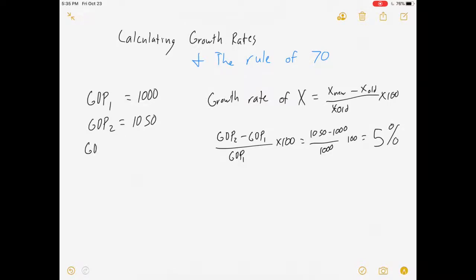What if we had a third year, and GDP was $1,155? Well, to calculate your growth between year two and three, you would take your new minus your old over your old times 100, would be $1,155 minus $1,050, divided by $1,050, times 100, which is going to come out to be $105 over $1,050. So, that's going to be a 10% increase in GDP.